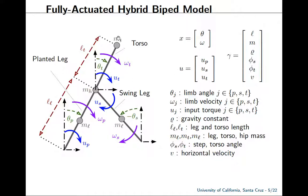We have a torso mass m_t, a hip mass m_h, and the leg masses m_l, which are located in the middle of each of the legs. We have the gravity constant rho, and the step angle phi_s, which is the angle the planted leg must reach in order for the next step to occur. We also have the torso angle phi_t, the angle we'd like to keep the torso at while walking, and the horizontal velocity v, which is the horizontal velocity we would like to achieve on average while the system is walking.